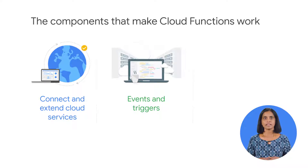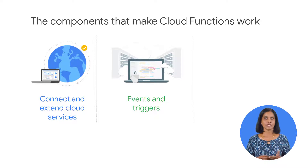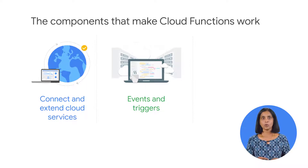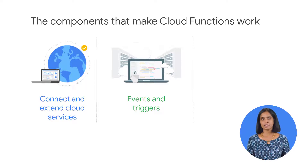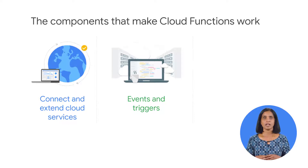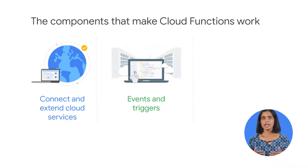Cloud events are things that happen in the cloud environment. These might be things like changes to data in a database, files added to a storage system, or a new virtual machine instance created. Events occur whether or not users choose to respond to them. You can create a response to an event with a trigger — a declaration of interest in a certain event or set of events. Binding a function to a trigger allows you to capture and act on the events.